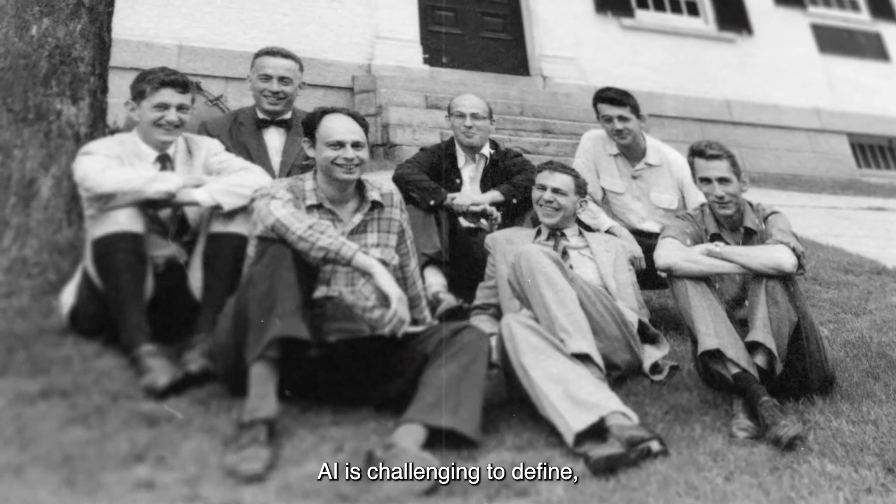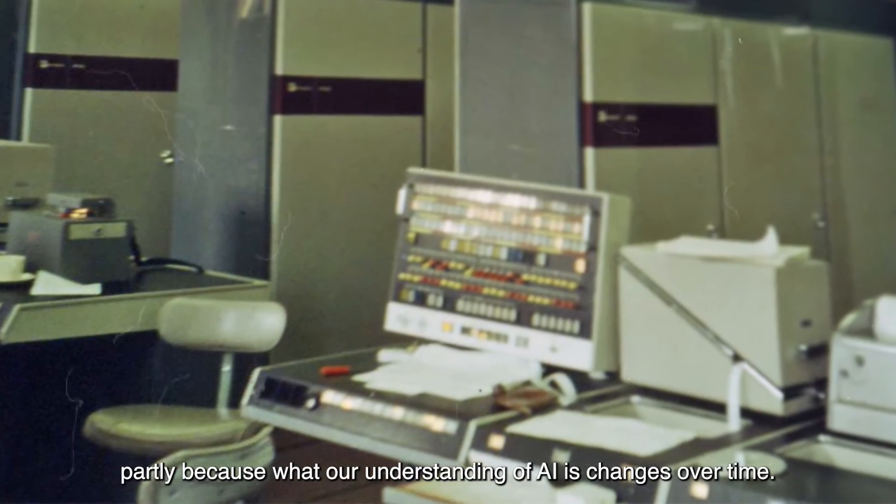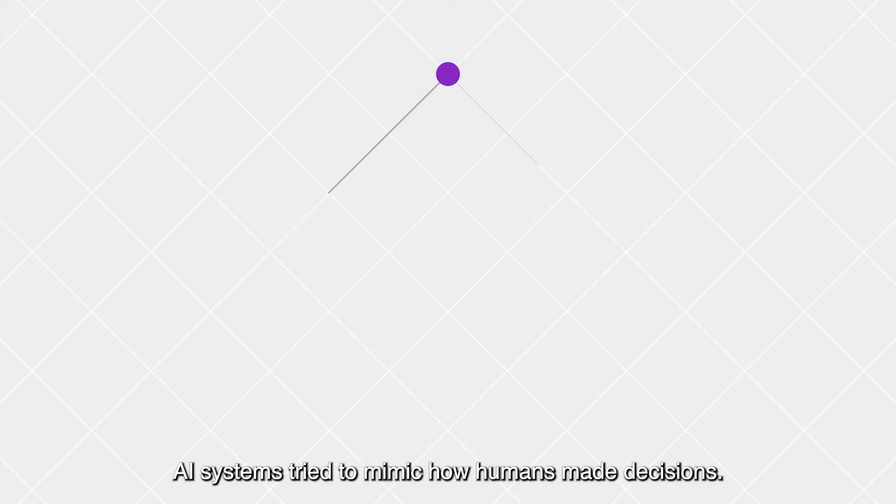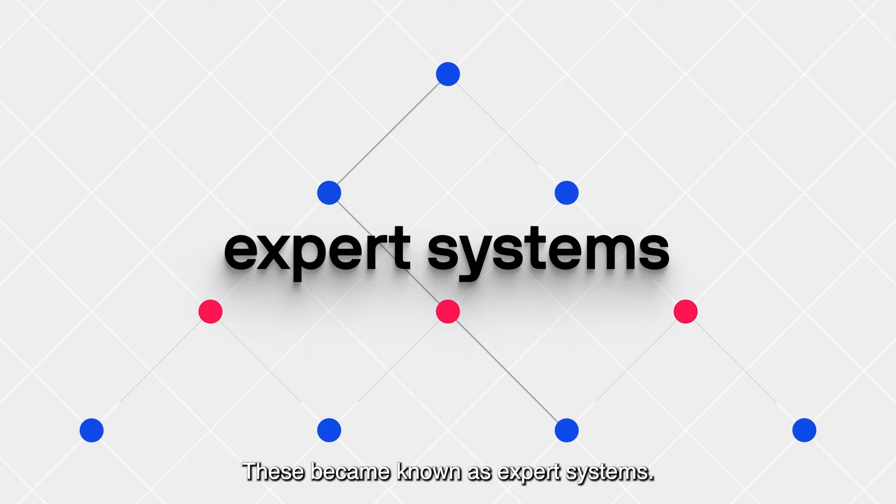AI is challenging to define, partly because our understanding of AI changes over time. When the field of AI began in the 1950s, AI systems tried to mimic how humans made decisions. These became known as expert systems.